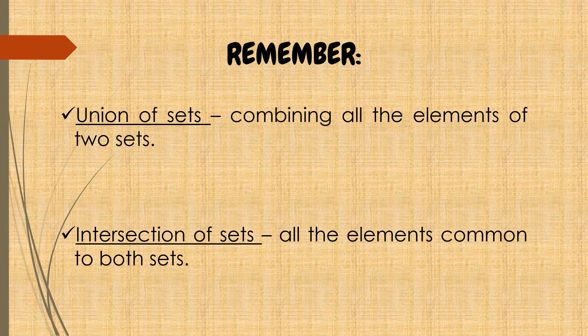Let us now summarize what we have learned in this lesson. When we said union of sets, it is combining all the elements of two sets or pagsasamasamahin niya lang lahat ng elements mayroon ang dalawa o higit pang sets. While intersection of sets means all the elements common to both sets. Ano yung mga elements na parehong mayroon ang dalawa o higit pang sets?